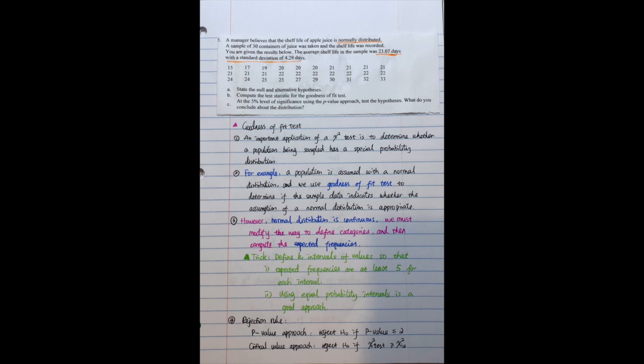The first question asks to develop the null and alternative hypothesis and then asks to compute the test statistic for the goodness of fit test. The last question says at a 5% level of significance using the p-value approach test the hypothesis. What do you conclude about the distribution?